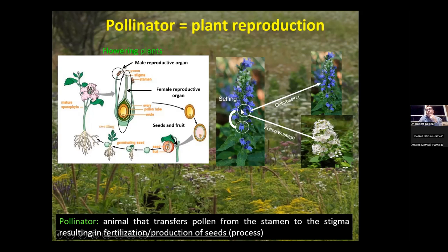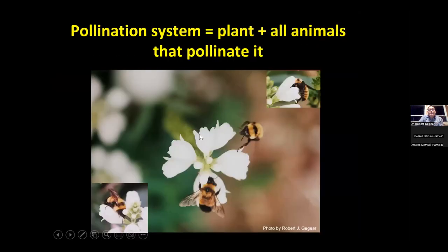There's strong selection for plants to get animals to move pollen to another individual of the same species — preferably an unrelated individual — to maximize reproductive success. This is called outcrossing. Plants have many adaptations to achieve this, to maximize their pollen transfer efficiency. If we look at a plant and all the animals that pollinate it, that combination is a pollination system. Feeding a bee is very different than having pollination — that process of pollination is very different from just feeding an animal.